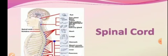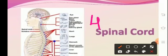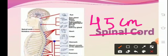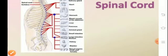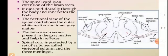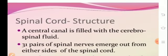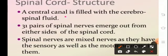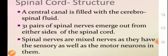The spinal cord is a structure approximately 45 cm long. It continues from the medulla oblongata and extends up to the lumbar region. As seen in the sectional view diagram, it has a central canal filled with CSF. 31 pairs of spinal nerves emerge from the spinal cord, and they are mixed nerves because they conduct both sensory and motor impulses. The spinal cord acts as the center for reflex action.